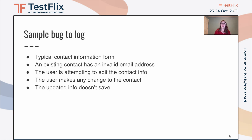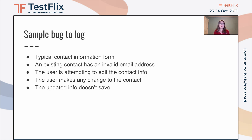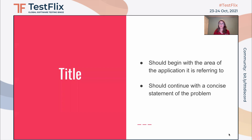Let's take a look at a sample bug to log. We'll imagine that we have a typical contact information form, and there's an existing contact in the contact list that has an invalid email address. The user is attempting to edit the contact info, they make any change to the contact, and then the updated info doesn't save. Let's see how we log this bug.